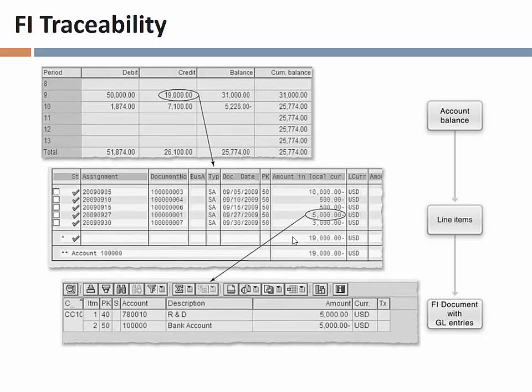This slide at the end of your deck illustrates exactly what we just looked at, where we start with being able to look at an account balance, then we can drill down and look at actual line items, and from there we can actually see the originating FI document that shows us the general ledger entities. This kind of traceability is very important in an organization. One group that really likes this is auditors — this makes auditing activities much, much easier, allowing us to isolate an area we want to dig into and step through all of the transaction history.